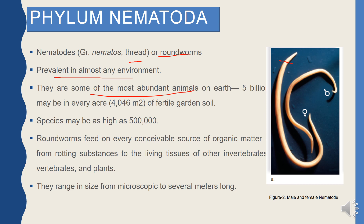They are the most abundant animals on Earth. For example, in a single rotting apple almost 90,000 or more individuals can be counted. In one acre of fertile garden soil, more than 5 billion nematodes have been recorded. Regarding species diversity, approximately 50,000 recorded species exist, but it is estimated that there may be more than 5 million species.